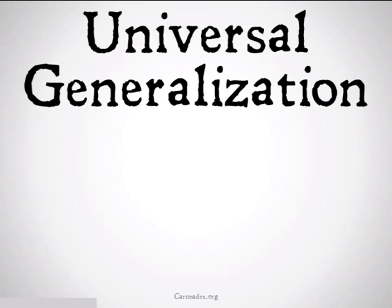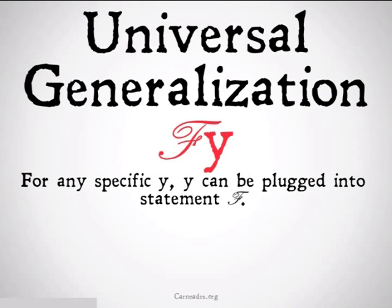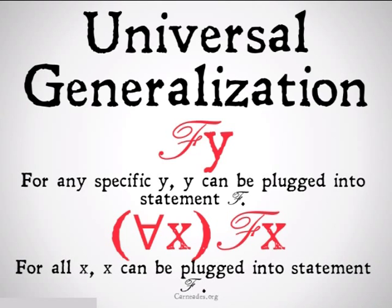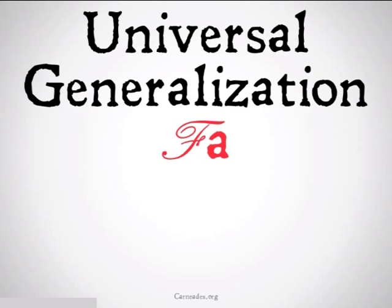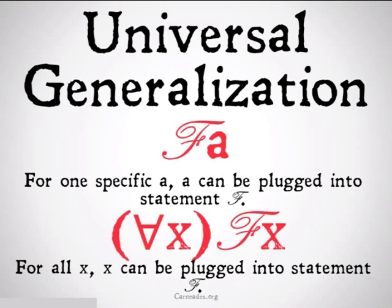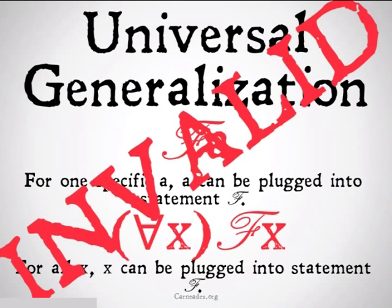Next up, universal generalization. That's going to be FY for any specific Y — Y can be plugged into statement F. From that, we can conclude for all X, FX — X can be plugged into statement F. There are limitations on universal generalization: we cannot go from F of A — one specific A, not any Y — to for all X, FX. When we have a nonspecific variable, we can generalize from it, but if we have one specific case, we cannot generalize from it. This would be invalid.